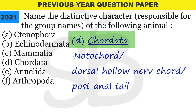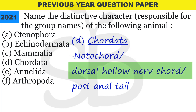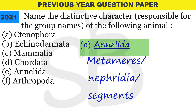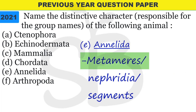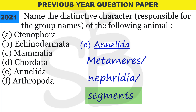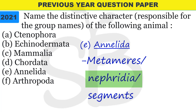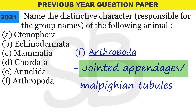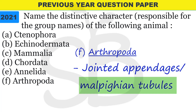Continuing the distinctive characters: Chordata - notochord is present, dorsal hollow nerve cord, and post-anal tail. Annelida - the body contains metameric segments and nephridia. Arthropoda - it contains jointed appendages and malpighian tubules.